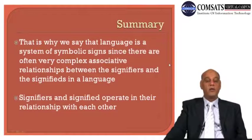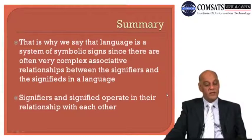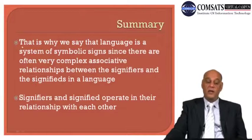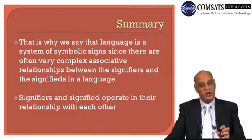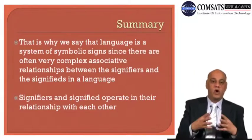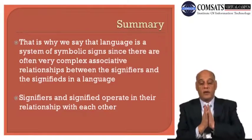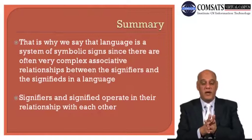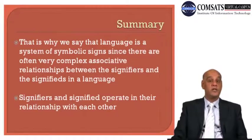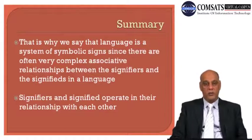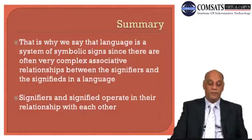That is why we say that language is a system of symbolic signs, since there are often very complex associative relationships between the signifier and the signified in language. Signifiers and signifieds operate in relationship with each other — they are being used for different objects in our language. Independently they don't have existence; words have a relationship with concepts, and concepts have a relationship with objects.